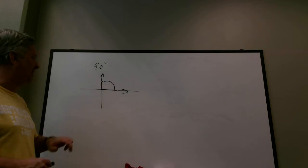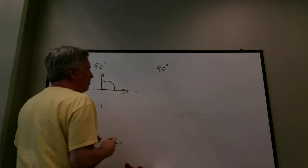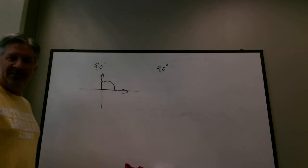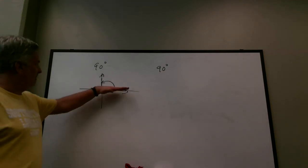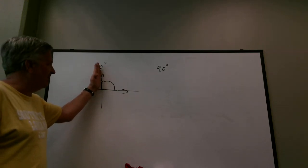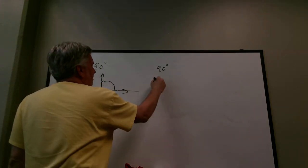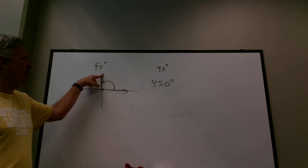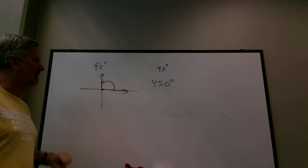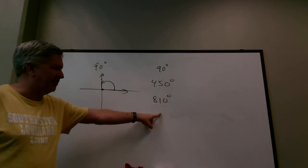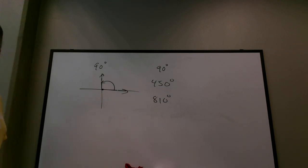The problem says find three positive angles and three negative angles coterminal with 90 degrees. Adding 360 to 90 gives 450; adding another 360 gives 810. You can keep adding 360s to get more coterminal angles. For negatives, 90 minus 360 is negative 270 — you go clockwise and still stop at the same terminal side.